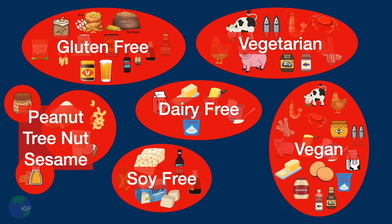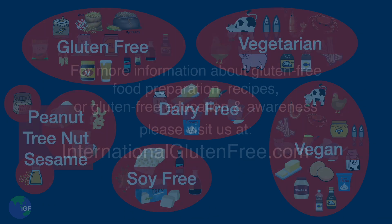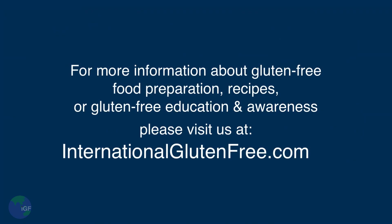To sum up this lesson, the six dietary restrictions we have covered each have their own unique group of ingredients to eliminate. It may be challenging to remember which ingredients are included or eliminated in each diet. For easy reference, we have created an illustrated guide that you can download and print out. For more information on gluten-free food preparation, recipes, and general education and awareness, please visit us at internationalglutenfree.com.